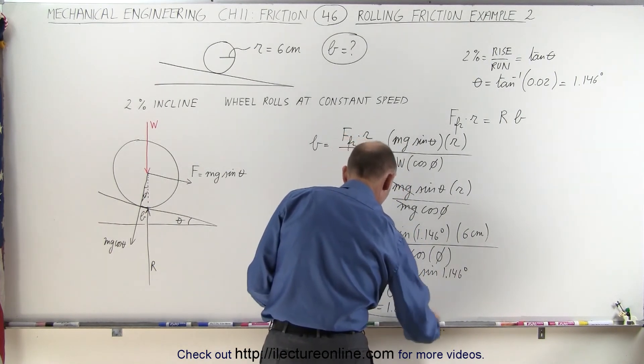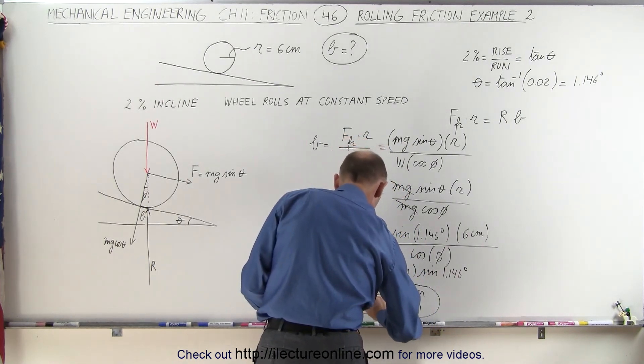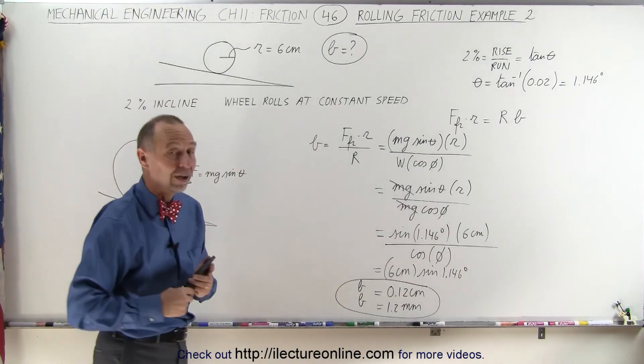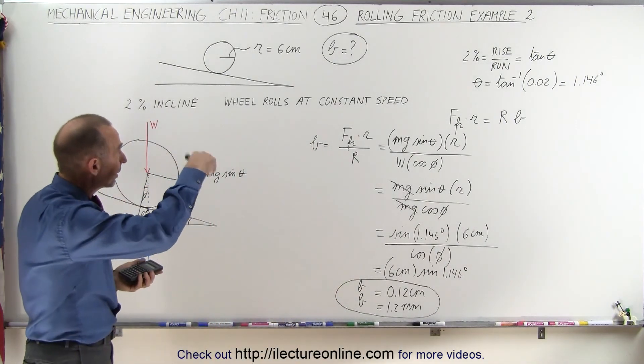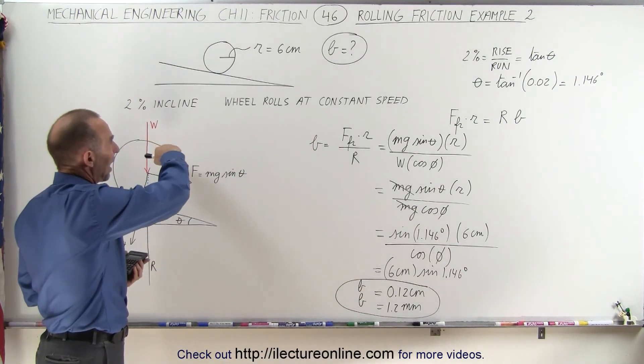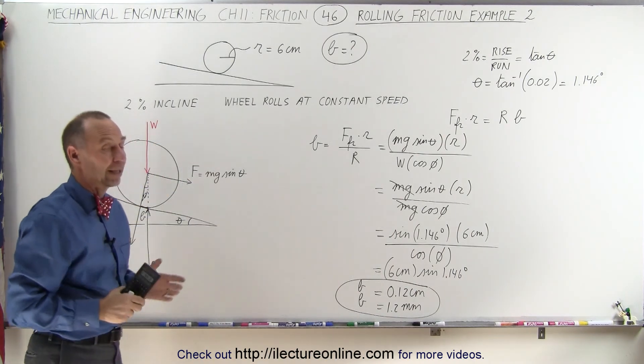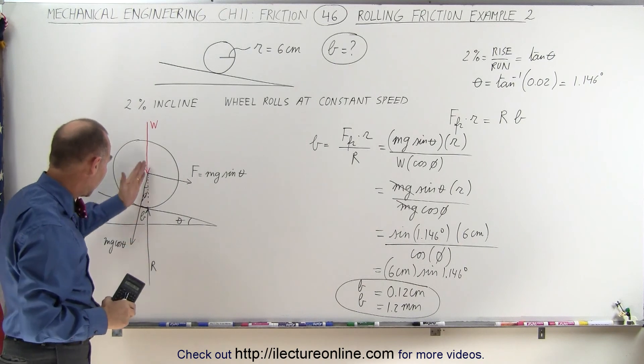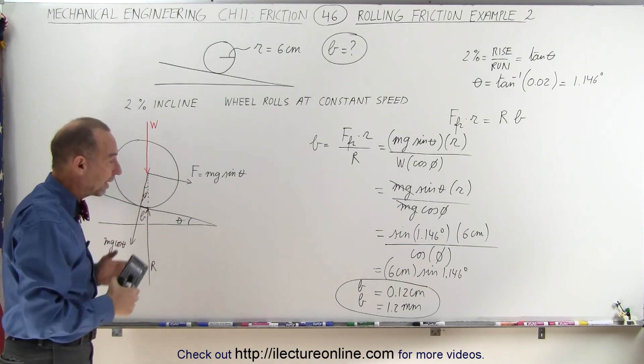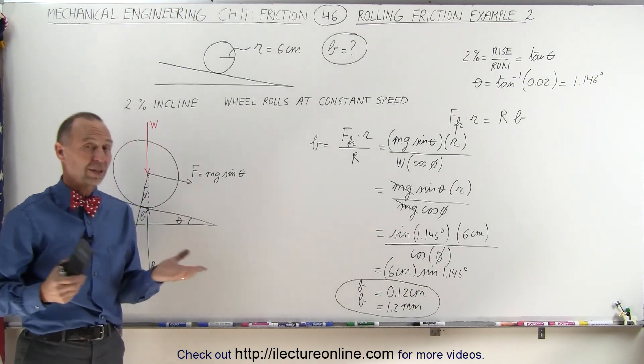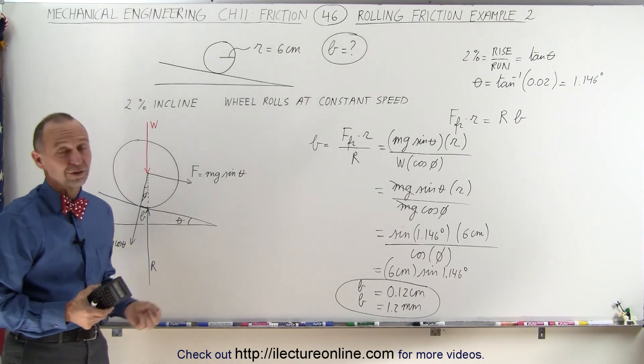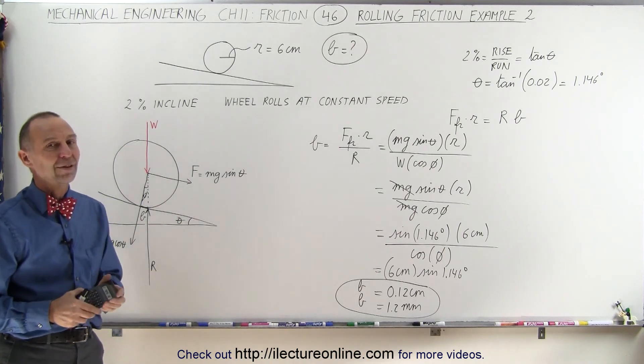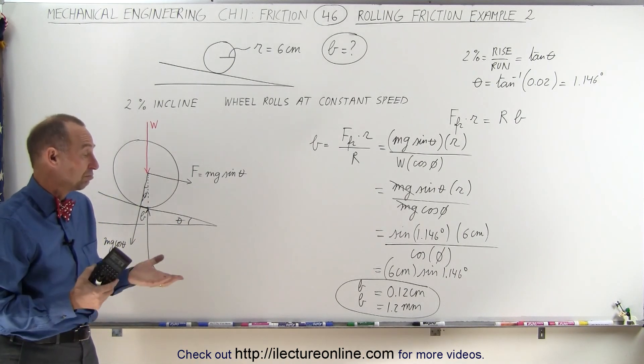So that's the answer. This is the coefficient of rolling friction in this case of a wheel that's rolling down an incline of 2% at a constant speed. If the angle was bigger between R and the normal here, then of course we'd have to work some additional calculations. But at this point, most of the time, B is very small. We don't have to do that. And that's how we can approximate the answer quite accurately.